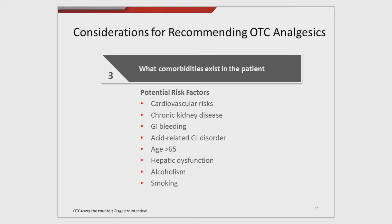We always worry about acetaminophen and hepatic risk, but we know that the risk is low and we should keep the dose to 4,000 mg a day or lower. We've got to take a good history and determine the patient's true alcohol intake. Keeping alcohol intake low will help prevent other problems as well as potential interactions with over-the-counter analgesics. It's also important to take a smoking history — whether they're a current smoker or live with one — as both increase the risk of GI bleeding or hypertension.